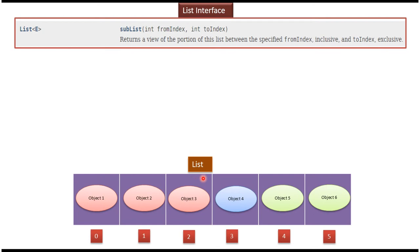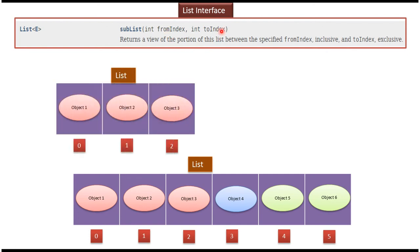Suppose from this list I want to get a sublist. I call the subList() method and pass a fromIndex and a toIndex. For example, if I pass fromIndex as 0 and toIndex as 3, I will get that portion as a sublist.